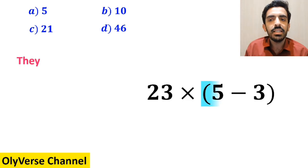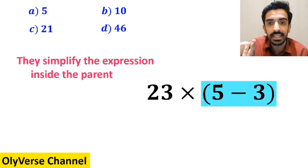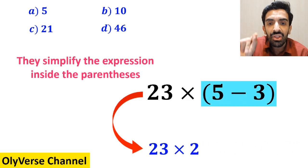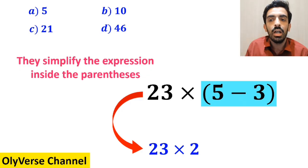In the final step, they simplify the expression inside the parenthesis and replace it with 23 multiplied by 2, which gives them the answer 46.